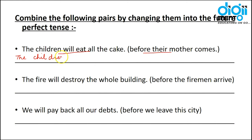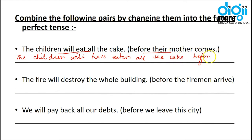The answer is: 'The children will have eaten all the cake before their mother comes.' The third form of 'eat' is 'eaten' — eat, ate, eaten. Before their mother comes, they will have finished all the cake.